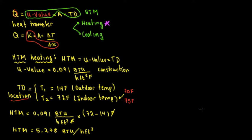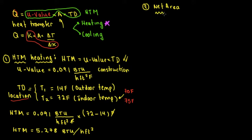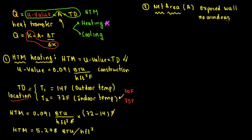So now I have the first part of the equation — the heat transfer multiplier. Now I need to know the area. Step number two is calculating the area. This has to be the net area, and the net area is going to be the exposed wall — no windows, no doors. Pure wall.